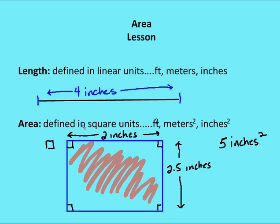So area is defined in square units: feet squared, meters squared, inches squared, etc. An example would be my rectangle here, which is two inches by two and a half inches. Two inches wide by two and a half inches high gives me an area of two times two and a half, or five inches squared.